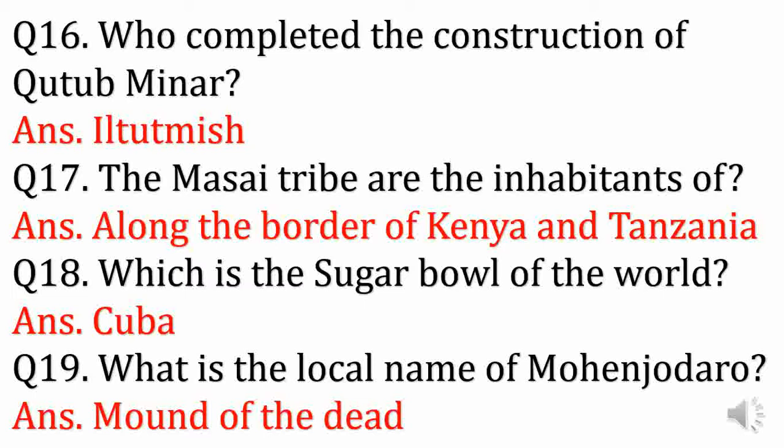The Maasai tribe are the inhabitants of? Answer: They live along the border of Kenya and Tanzania. Which is the sugar bowl of the world? Answer: Cuba.